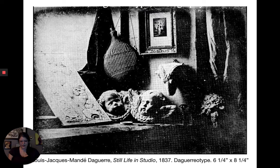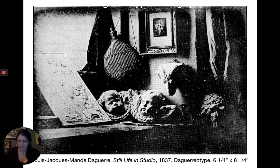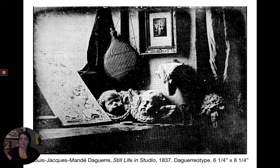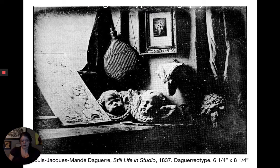Invented nearly at the same time is a similar technique created by the Englishman William Henry Fox Talbot — Daguerre is French, if you couldn't tell by his name. Talbot lived from 1800 to 1877 and invented something called the calotype — spelled C-A-L-O-T-Y-P-E — which we'll also talk about.